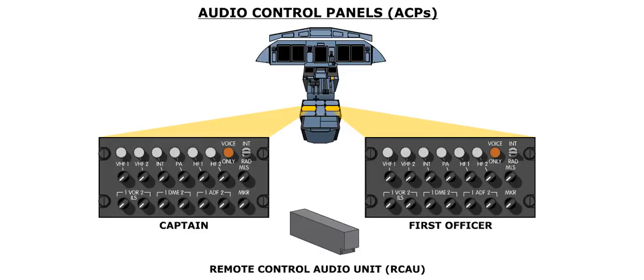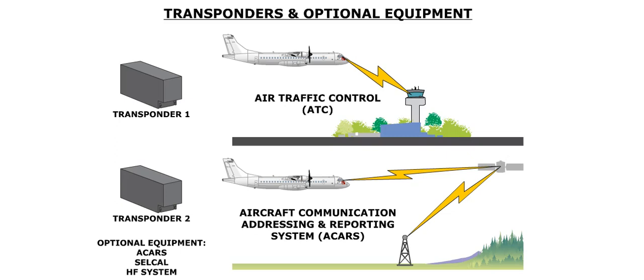The flight crew communication system primarily consists of two audio control panels, located on the center pedestal, and the remote control audio unit or RCAU. The aircraft incorporates two transponders. Optional communication equipment consists of ACARS, or aircraft communication addressing and reporting system, cell call or selective calling, and an HF system.